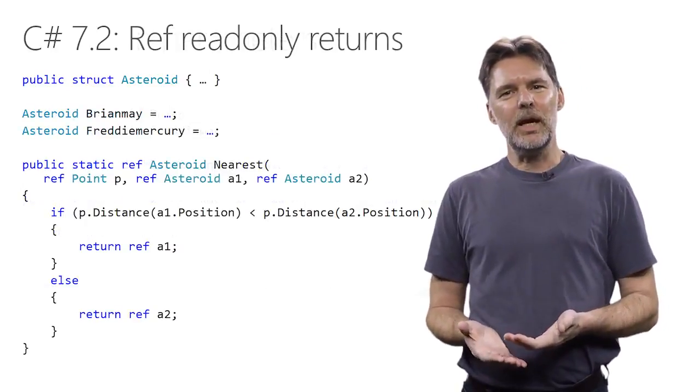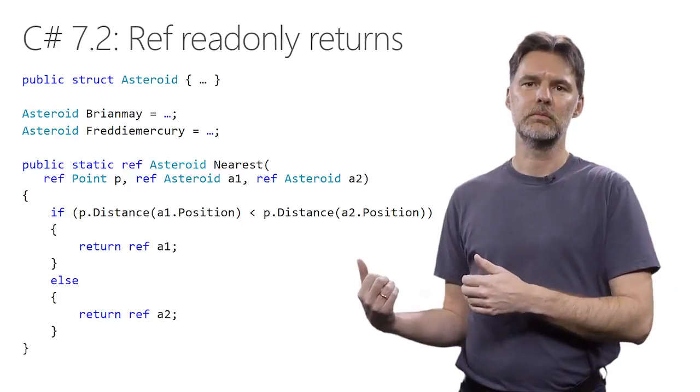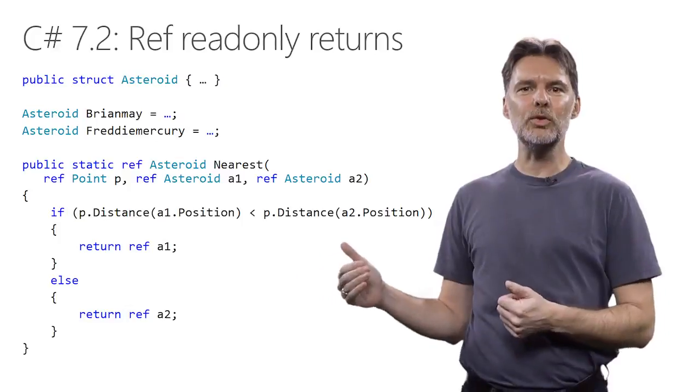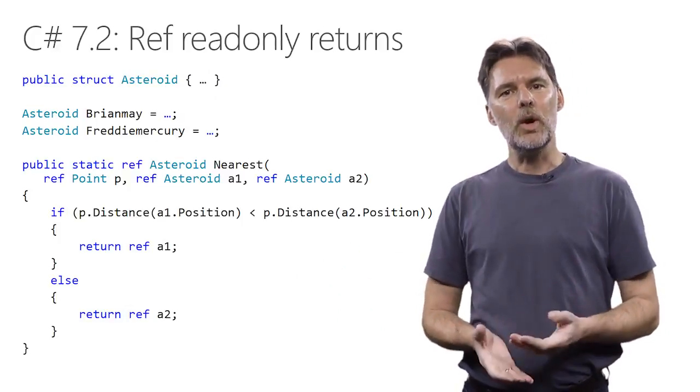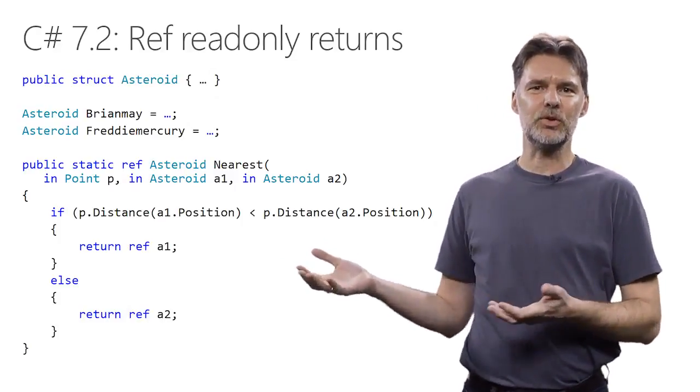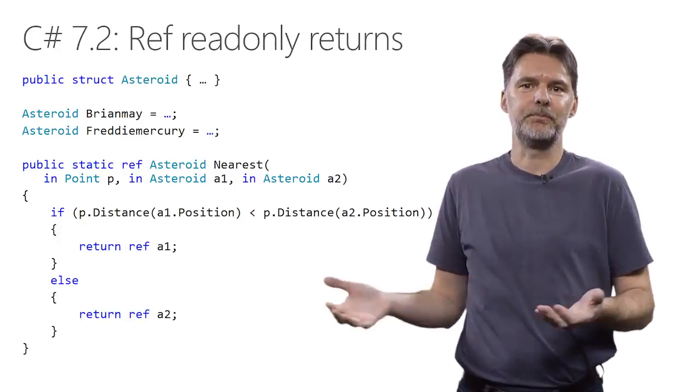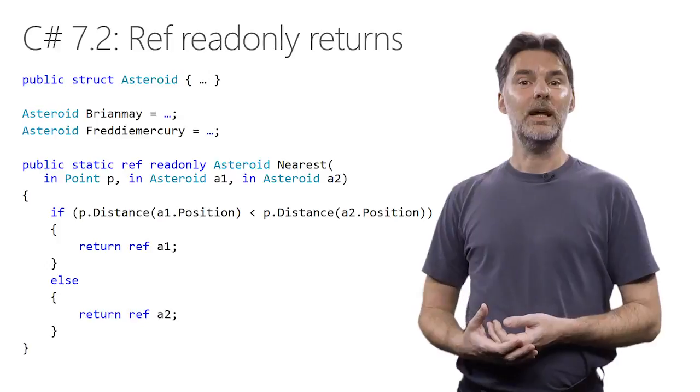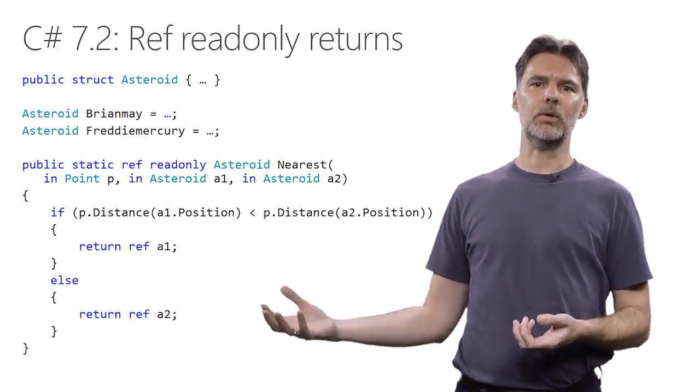C# 7.0 added the ability to return a reference, just as you can pass one in. Here we have another method that takes two asteroids by reference and returns the one closest to a given point, again by reference. Well, what if we want to take in parameters to this method instead? Then we cannot just return a ref, because then the caller may modify it, and we just promised we wouldn't. Instead, we let you return the ref read-only. That way, you protect the immutability of the in parameter, even as you return it back to the caller.